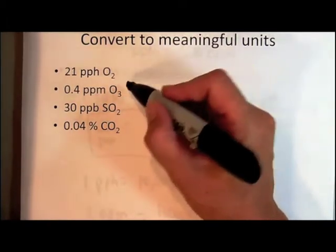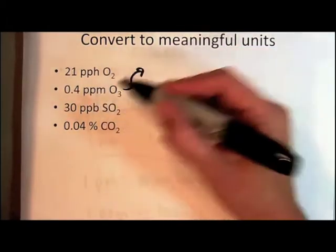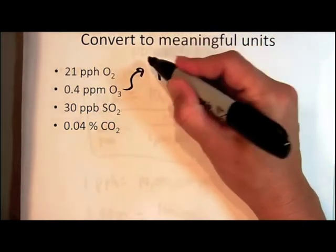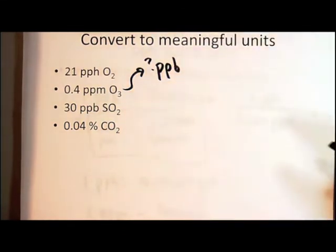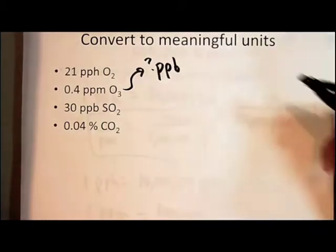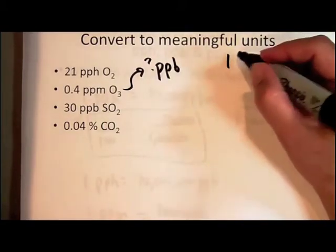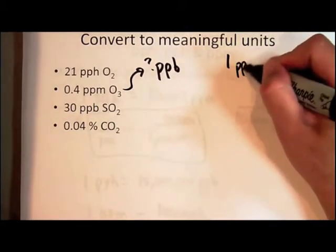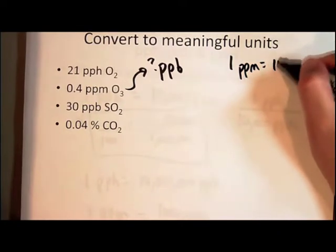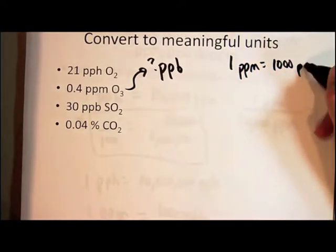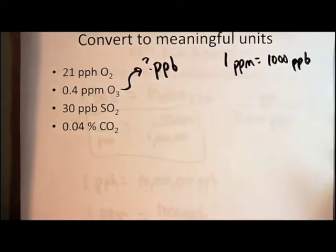Okay, so how can I convert 0.4 parts per million to units of parts per billion? I can remember the definition or the equality: one part per million is the same as 1,000 parts per billion, because one over a million equals a thousand over a billion.